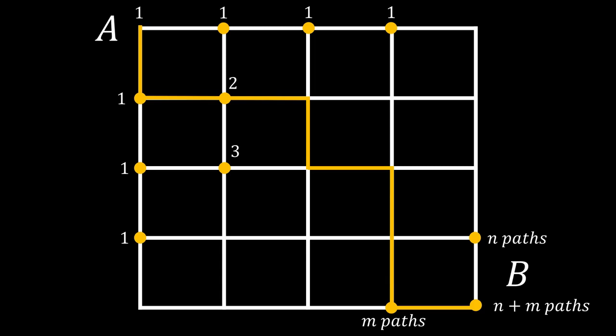So, we must ultimately fill the grid with the number of paths for each point to find the number of paths to b.